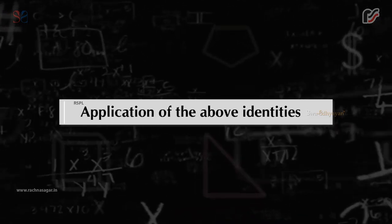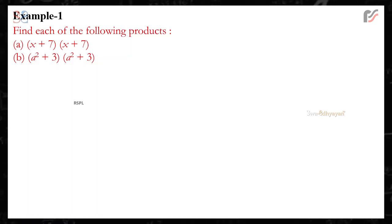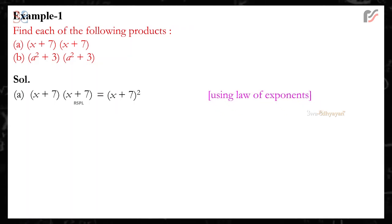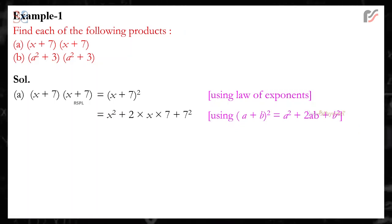Application of the above identities. Example 1: Find each of the following products. Part A: (x + 7)(x + 7). Solution: (x + 7)(x + 7) = (x + 7)², using the law of exponents, which equals x² + 2 × x × 7 + 7², using (a + b)² = a² + 2ab + b².